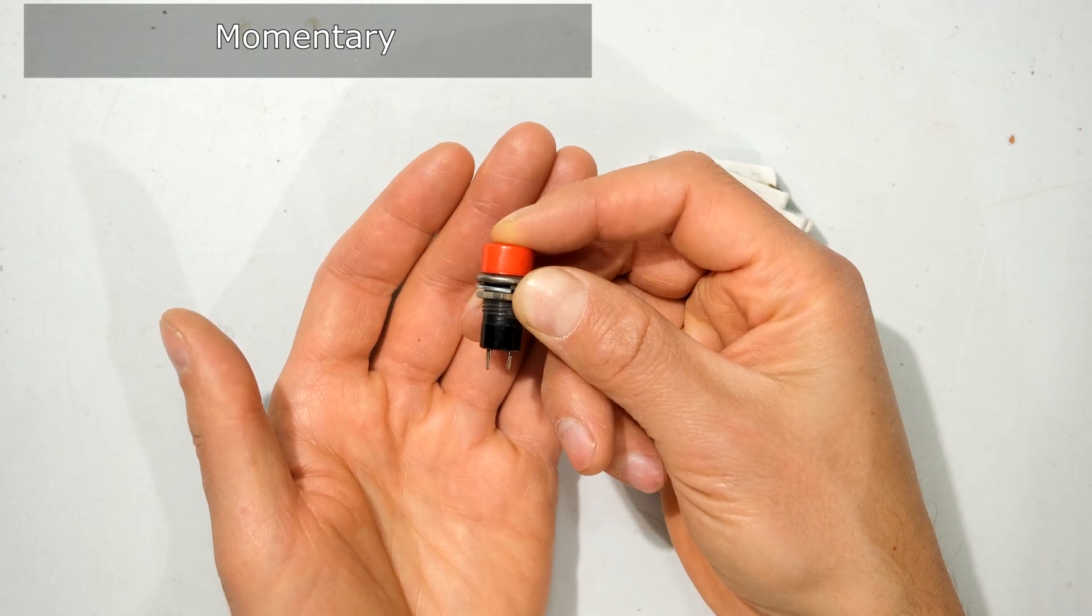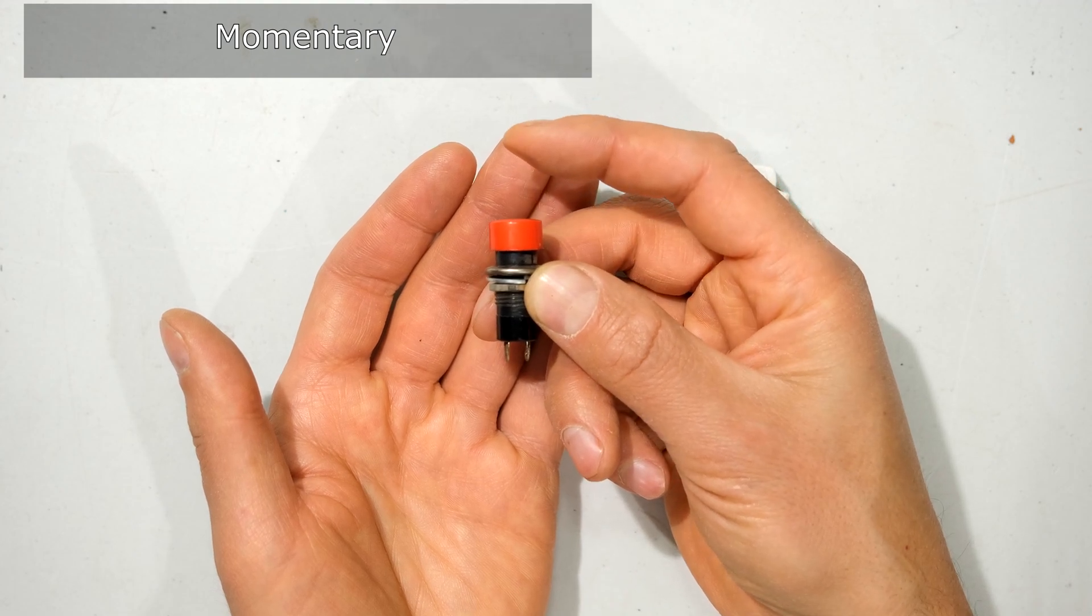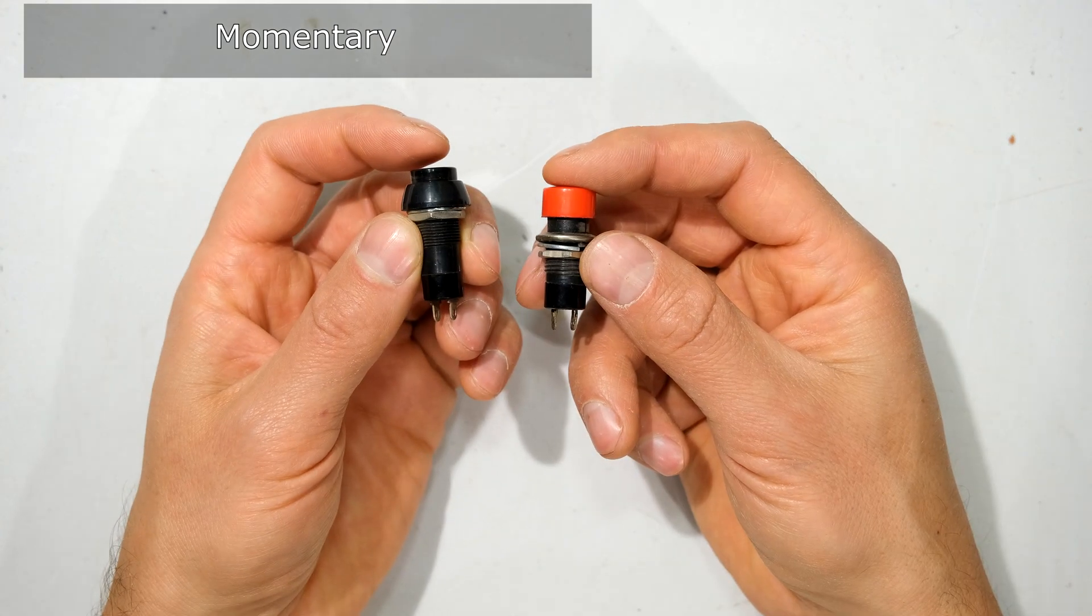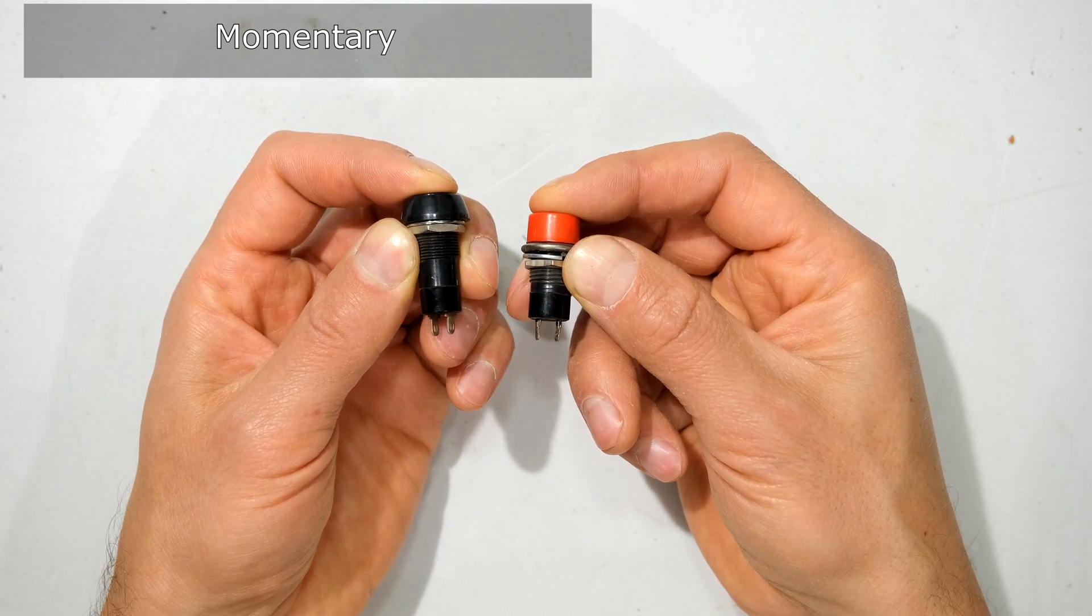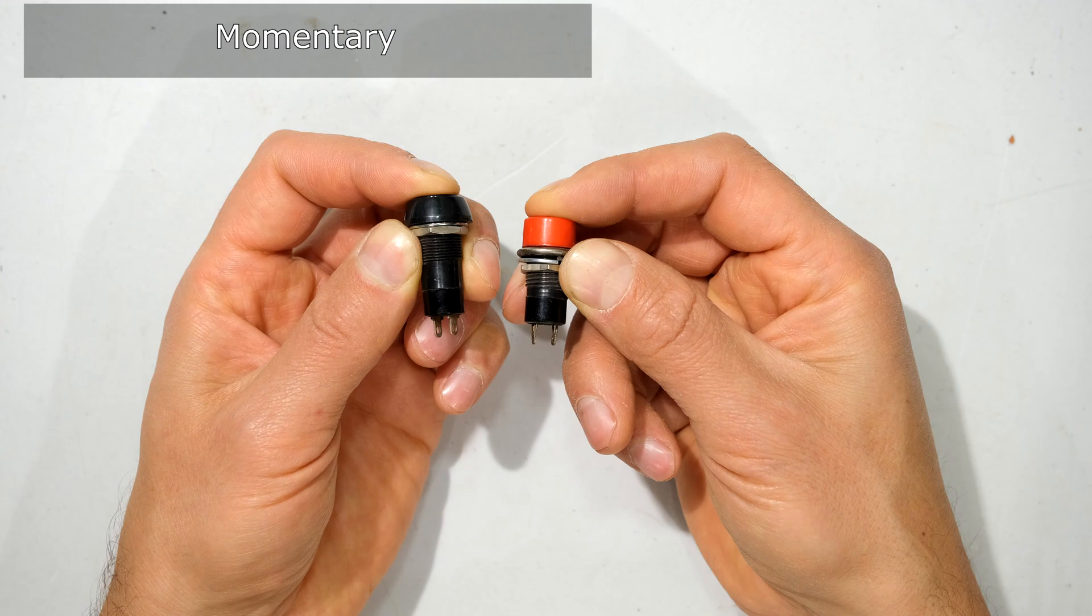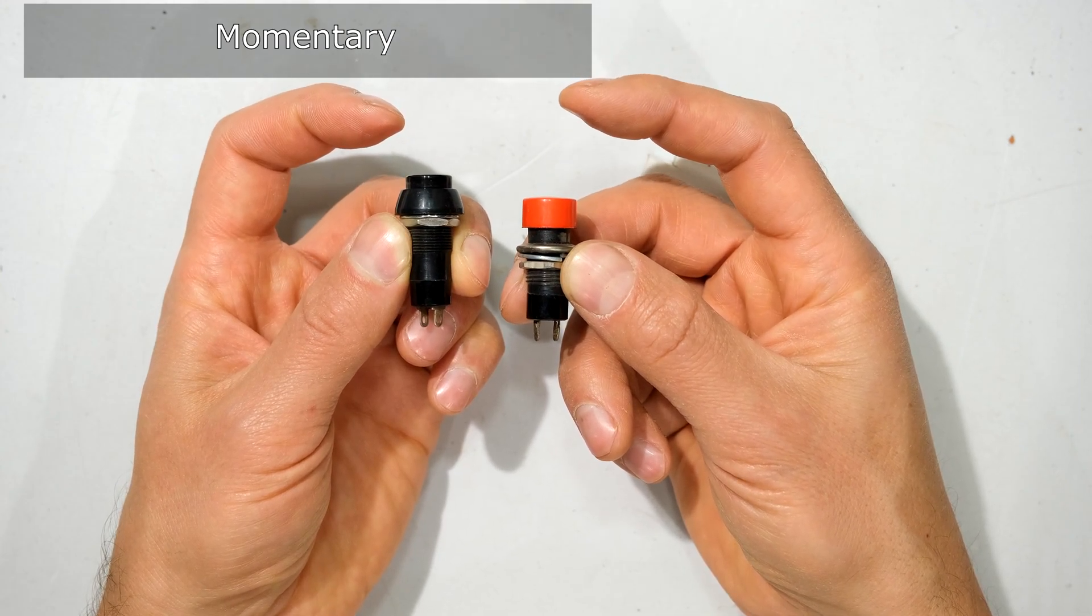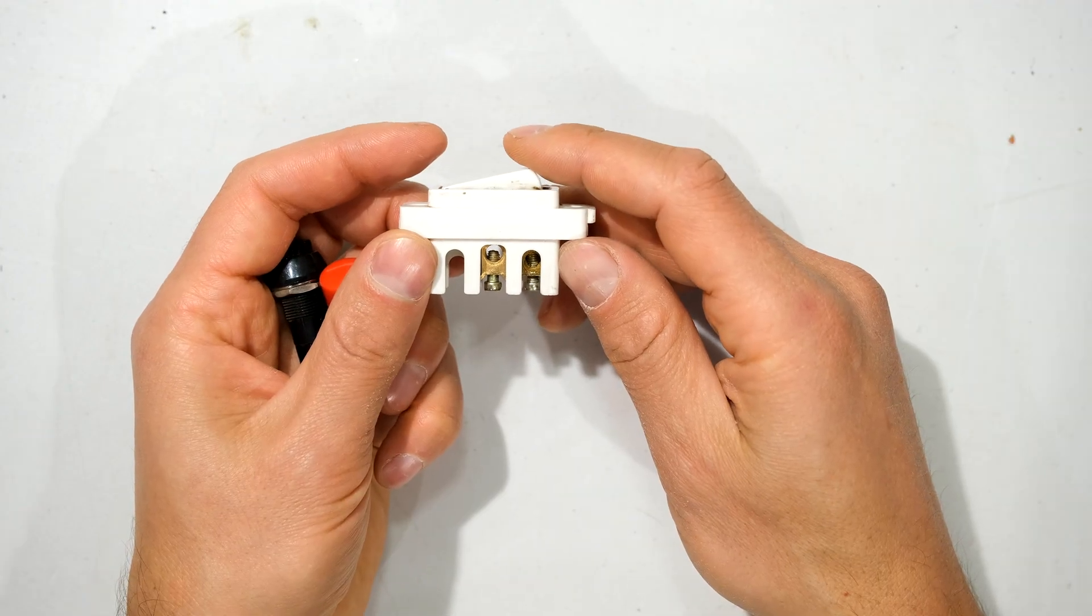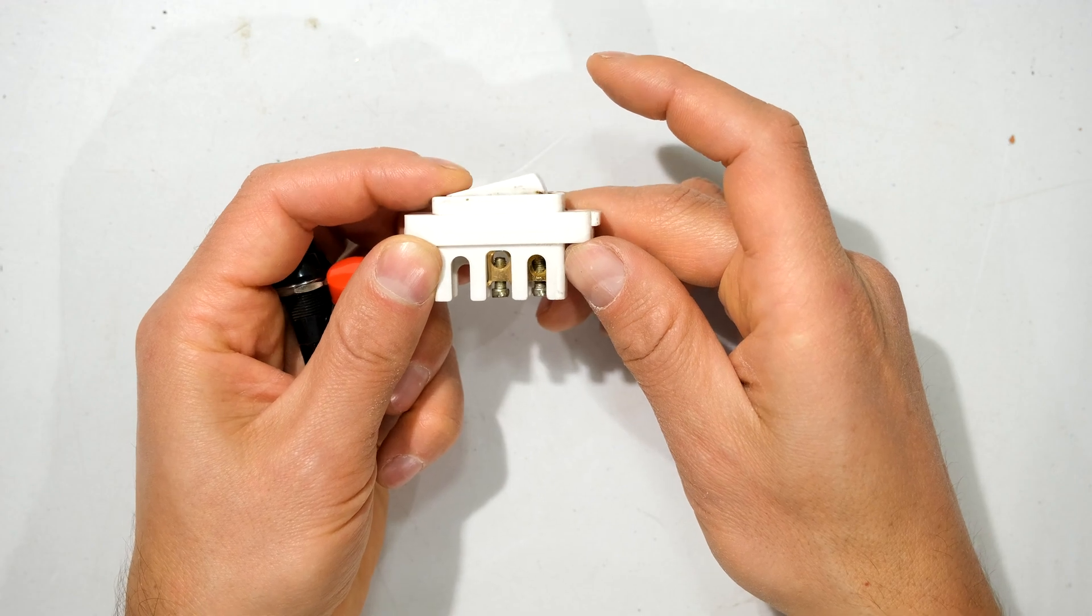While this on the other hand, when I press it, it's changing the state. When I release it, it's changed the state again. So if this is a push to make and this is a push to break, both of them require the push in order to enable the push to make or push to break function. As I release it, they go back to their original position. This on the other hand does not. When I press it, it stays like that until I rock it the other way.